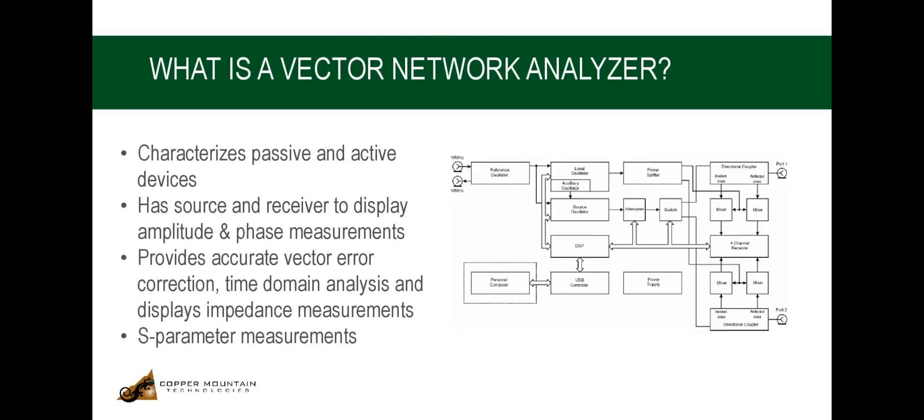Now, let us see how a two-port USB VNA works internally. The analyzer consists of a source oscillator, a local oscillator, source power attenuator, and a switch connecting the source signal to two directional couplers which are connected to port 1 and port 2 of the VNA.